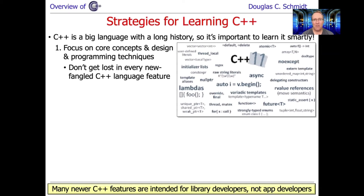A lot of the later features added to C++ were added largely to make the job of library developers easier — enabling lightweight, high-performance abstractions that are easy to use but perhaps hard to build. So many recent features are there for library developers, not necessarily for ordinary application developers. The ordinary person writing programs in C++ doesn't need to master sophisticated library development using advanced template metaprogramming; they simply need to know how to use those features to write good programs, which is what we'll focus on.